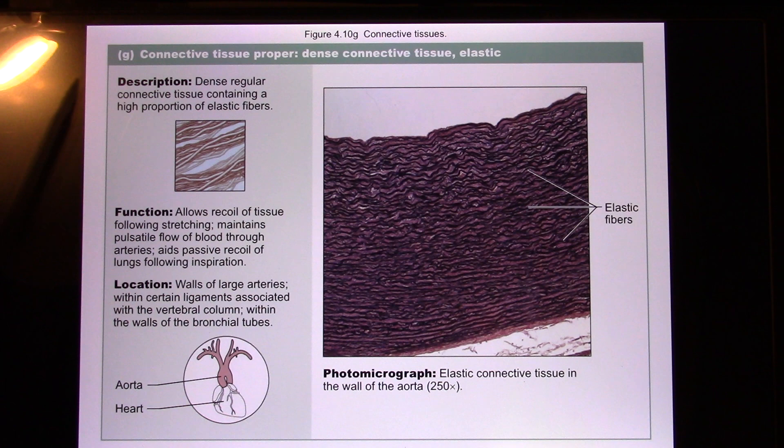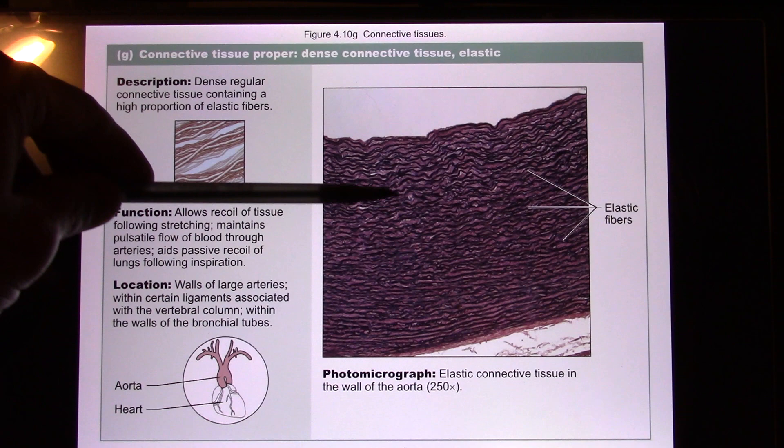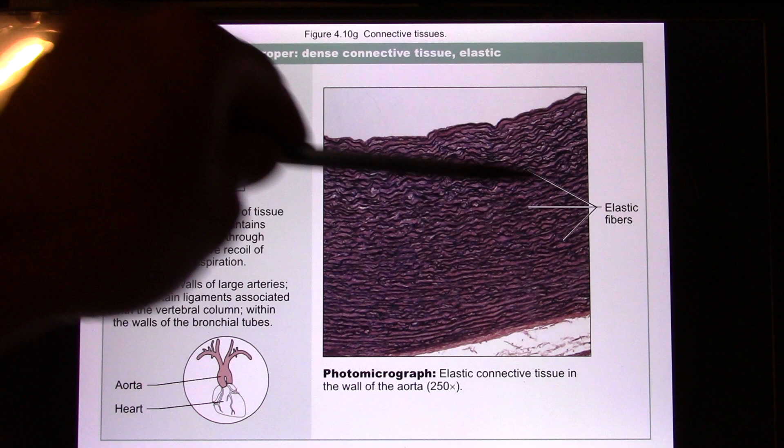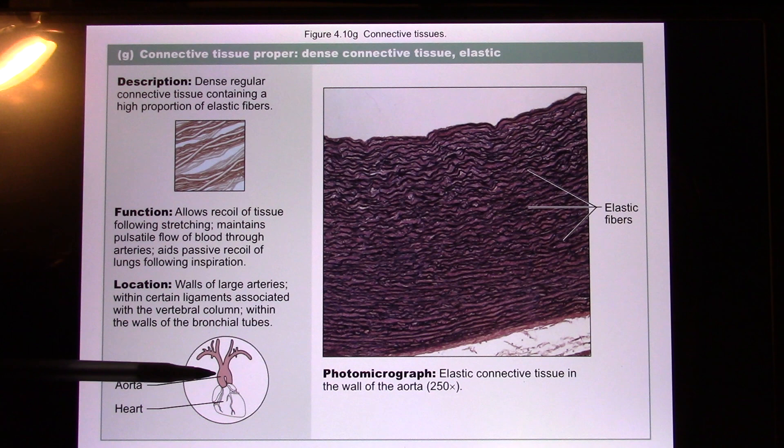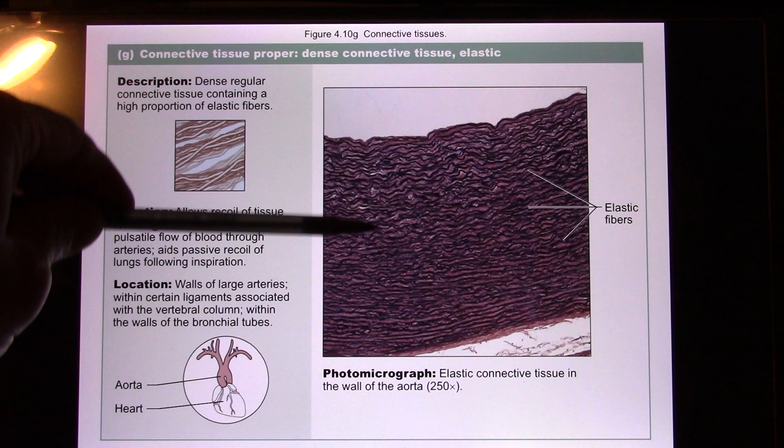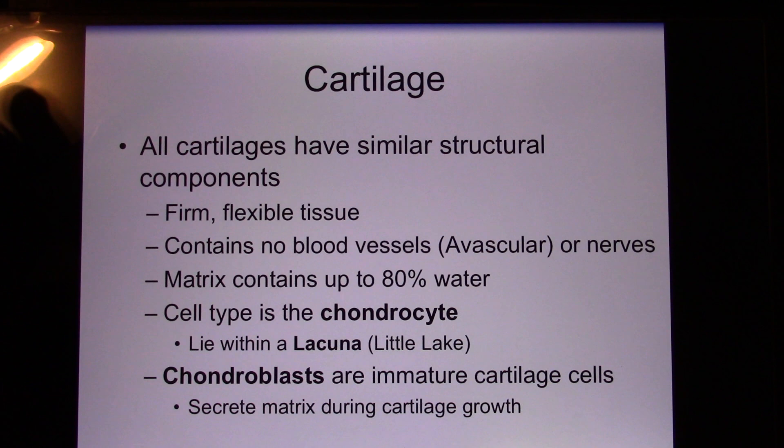Next, elastic connective tissue. Elastic connective tissue has a lot of elastic fibers — I call elastic fibers rubber bands — so they can expand and recoil. Their color is very dark in staining. You see a lot of elastic fiber in the aorta. The aorta is the blood vessel connected to the left ventricle. Every time the heart contracts, it squeezes blood into the aorta, so the aorta needs to expand, take all the blood, and recoil back. That's why it has a lot of elastic fiber.